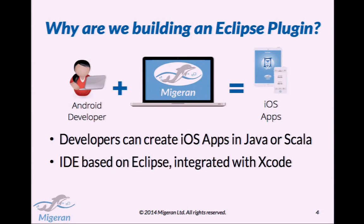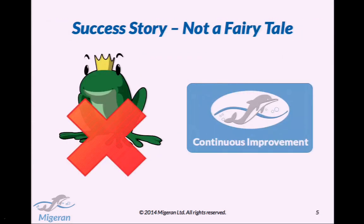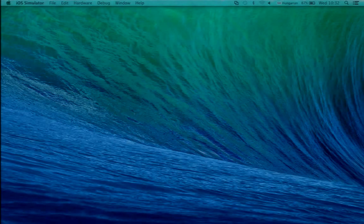When we started to build our product Migeran, it was really the first thing that we needed — Eclipse IDE support for that. What is Migeran? With it, you can basically build iOS applications in Java. So if you're an Android or Java developer, you can take Migeran and create iOS apps with it. The IDE is based on Eclipse, that's why we are here. And it's also integrated with Xcode, so if you have more complex projects with native code and UI designs built in the Xcode designer, you can do that quite easily.